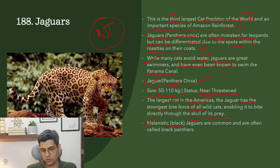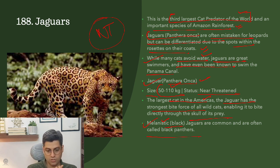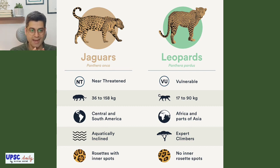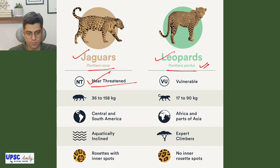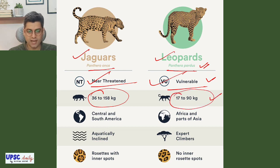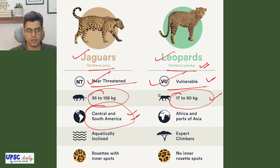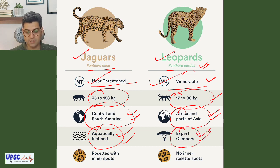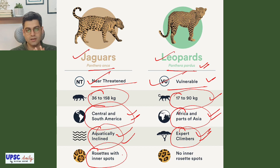Melanistic jaguars, where melanin in the skin is elevated, are commonly called black panthers. Comparing jaguars and leopards: Jaguar — Panthera onca, near-threatened, 50 to 110 kg, found in Central and South America, aquatically inclined. Leopard — Panthera pardus, vulnerable, 36 to 158 kg, found in Africa and parts of Asia, expert climbers. The key visual difference is that jaguars have rosettes with inner spots, while leopards do not have spots inside their rosettes.